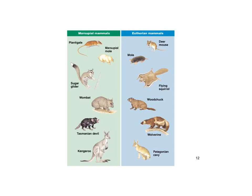Here are more examples of analogous organisms. These are marsupial mammals, which live pretty much exclusively in Australia and give birth to undeveloped young that grow in a pouch. Then we have eutherian mammals, which are nourished by a placenta inside the uterus. We see similar organisms even though they're distantly related, because they live in similar environments: a mole and a marsupial mole, a flying squirrel and a sugar glider, a wombat and a woodchuck, a wolverine and the Tasmanian devil, and the kangaroo and the cavey.